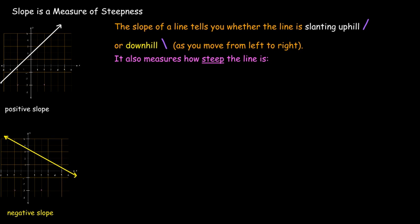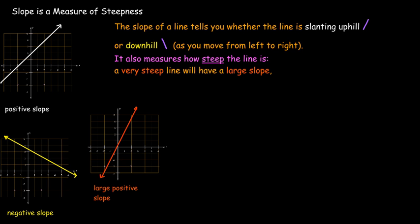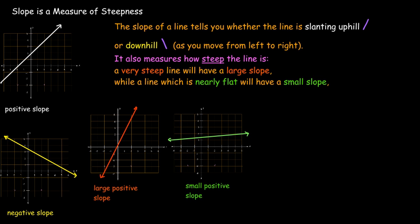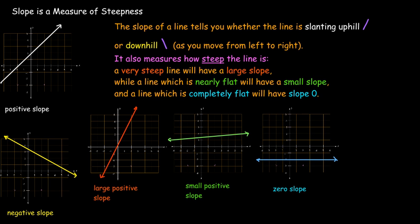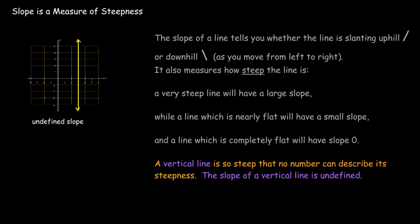And it also tells you how steep it is. If you were trying to walk up that line, how much effort would it take? Well, if it's very steep, you're going to have a large slope. If it's not very steep, if it's almost flat, then you're going to have a small slope. And finally, if it's completely flat, horizontal, then the slope will be zero. Now there's still one more case that we haven't talked about. And that's a vertical line. A vertical line is so steep that no number can describe its steepness. So we say that the slope of a vertical line is undefined.